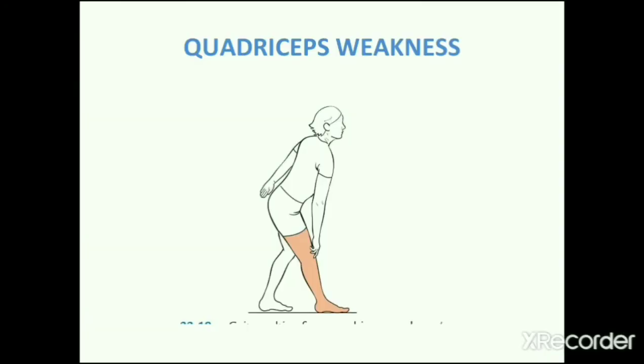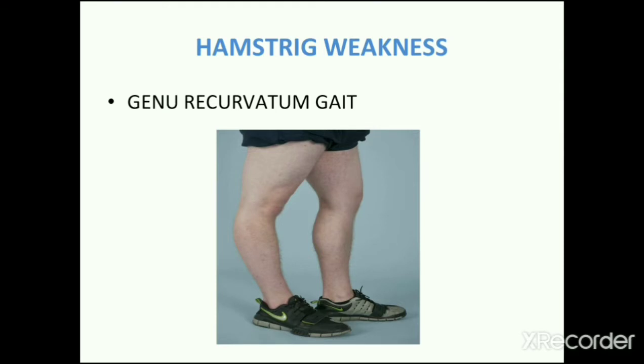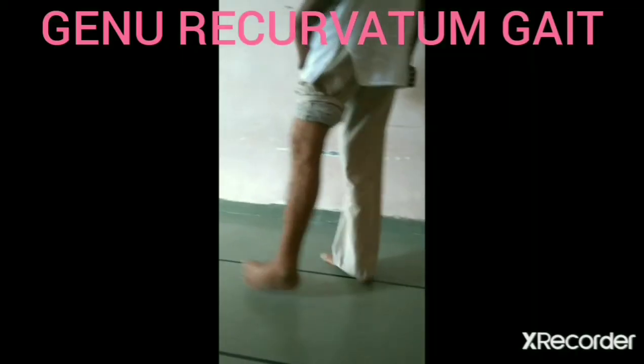The third gait is quadriceps weakness gait. Quadriceps action is needed during heel strike and foot flat when there is a flexion moment acting at the knee joint. Quadriceps weakness or paralysis will lead to buckling of the knee during the gait cycle. When quadriceps is weak, the person may push on the anterior thigh during stance phase. When the hamstring muscle is weak, genu recurvatum gait is present and the knee will go into excessive hyperextension.